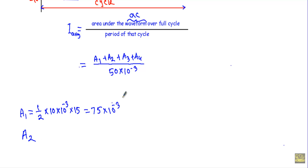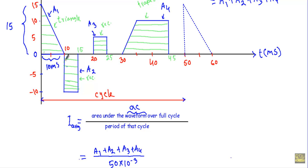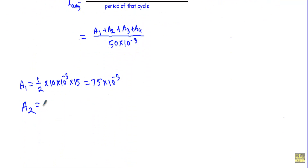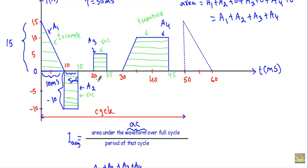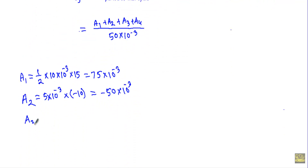Next, I will calculate A2, which is the area of the rectangle. The base of this rectangle is 5 ms and the height is −10. So A2 equals 5 × 10⁻³ × (−10), which equals −50 × 10⁻³. After that, I will calculate A3, the area of the next rectangle. Its base is 5 ms and the height is 5, so A3 equals 5 × 10⁻³ × 5, which equals 25 × 10⁻³.